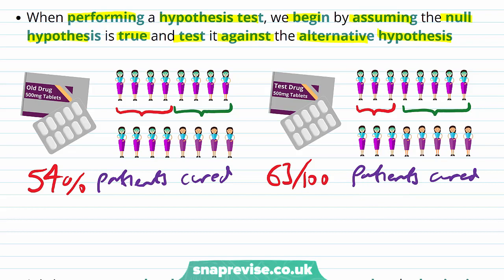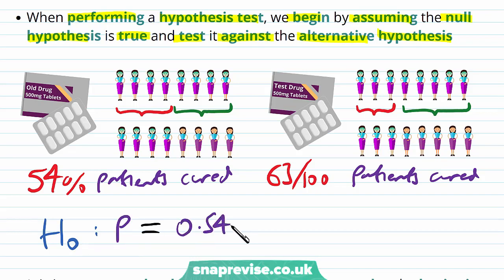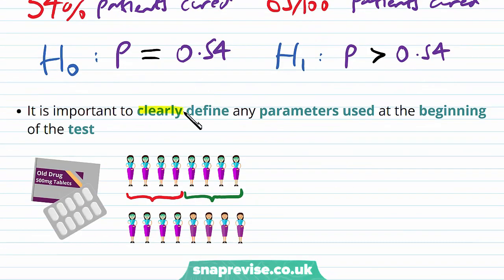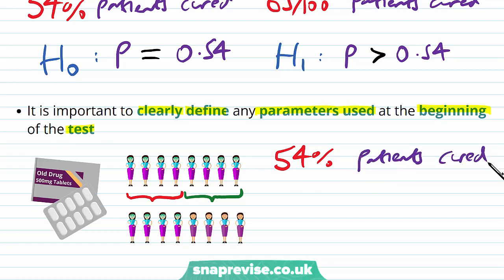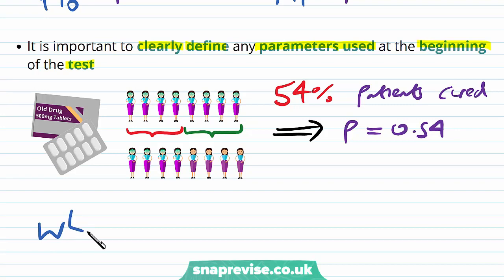In our hypothesis test we have our H0, our null hypothesis, which is that the proportion of cured patients P is equal to 0.54, and we take our alternative hypothesis H1 to be that the proportion P is strictly greater than 0.54. It is important to clearly define any parameters used at the beginning of the test. We define P as the proportion of cured patients.